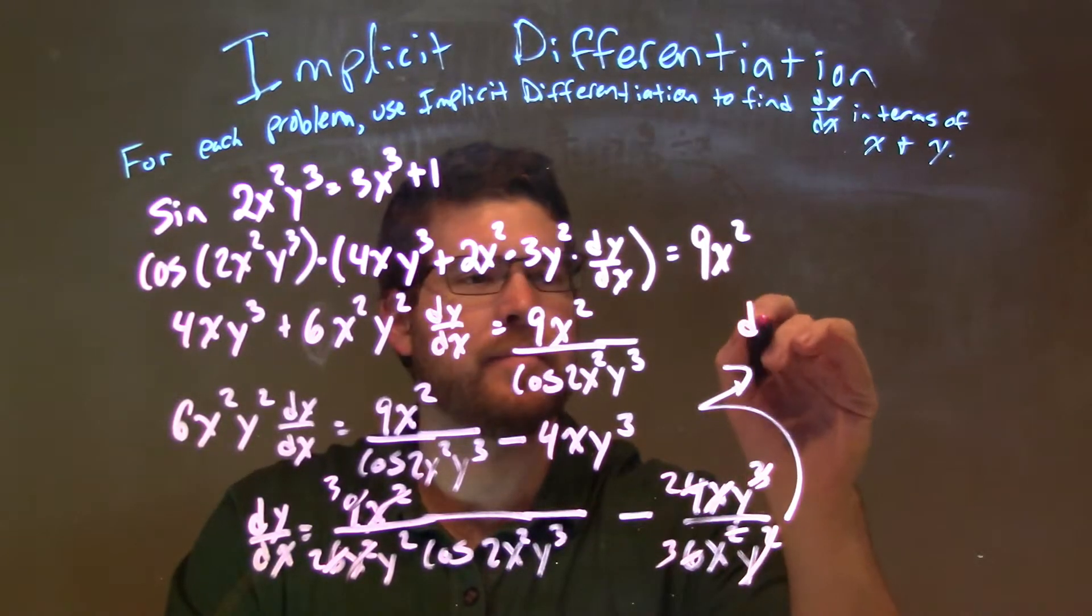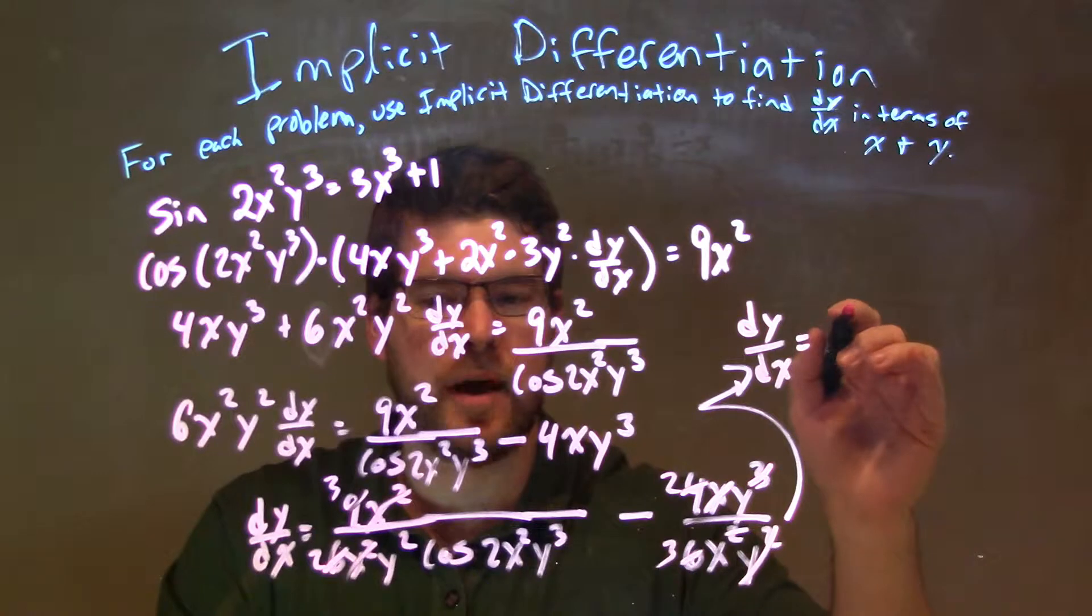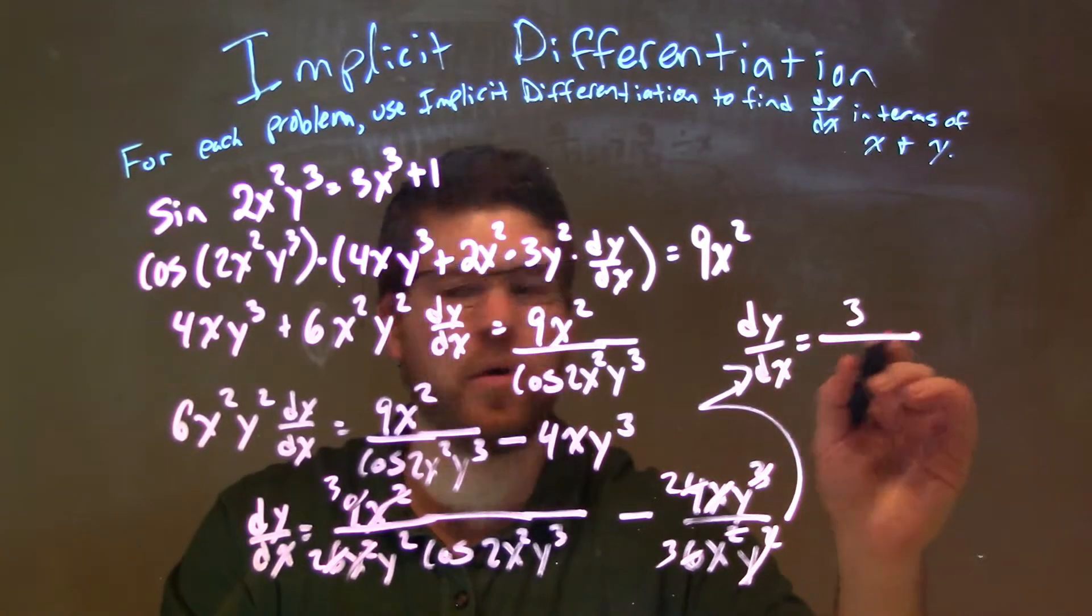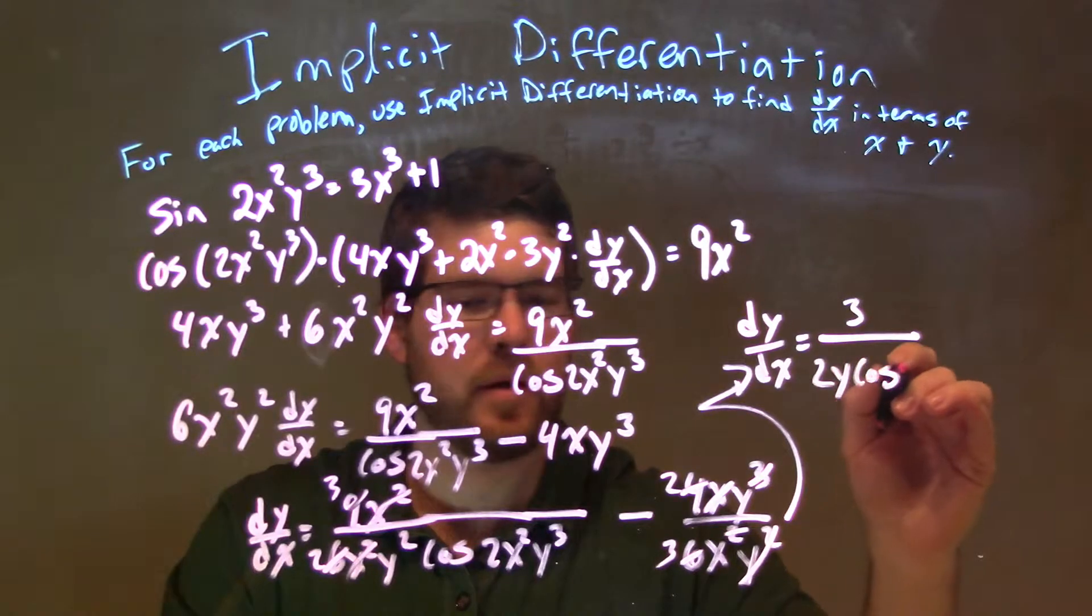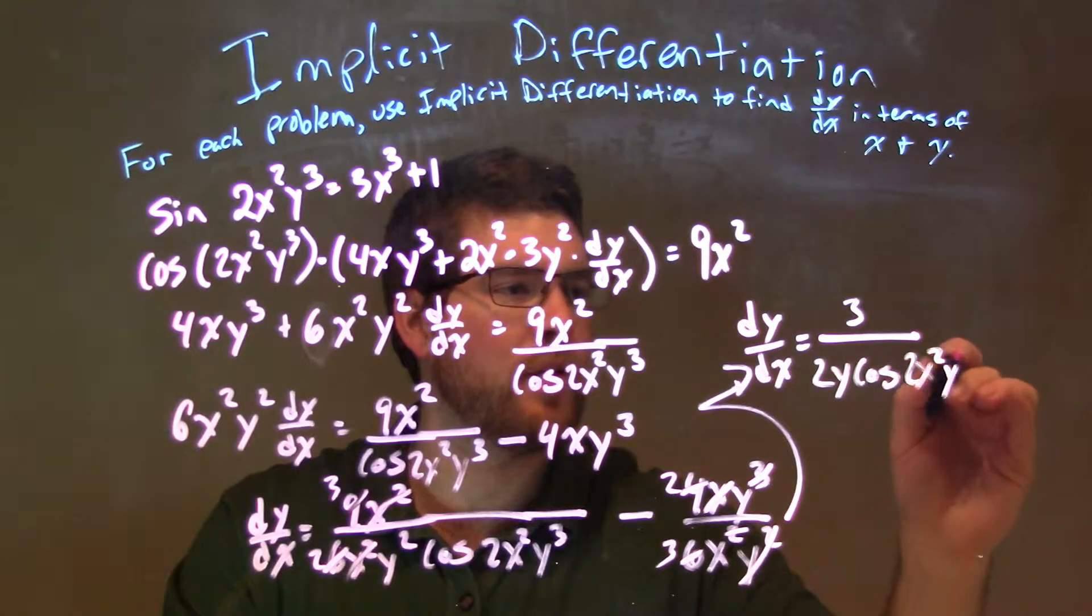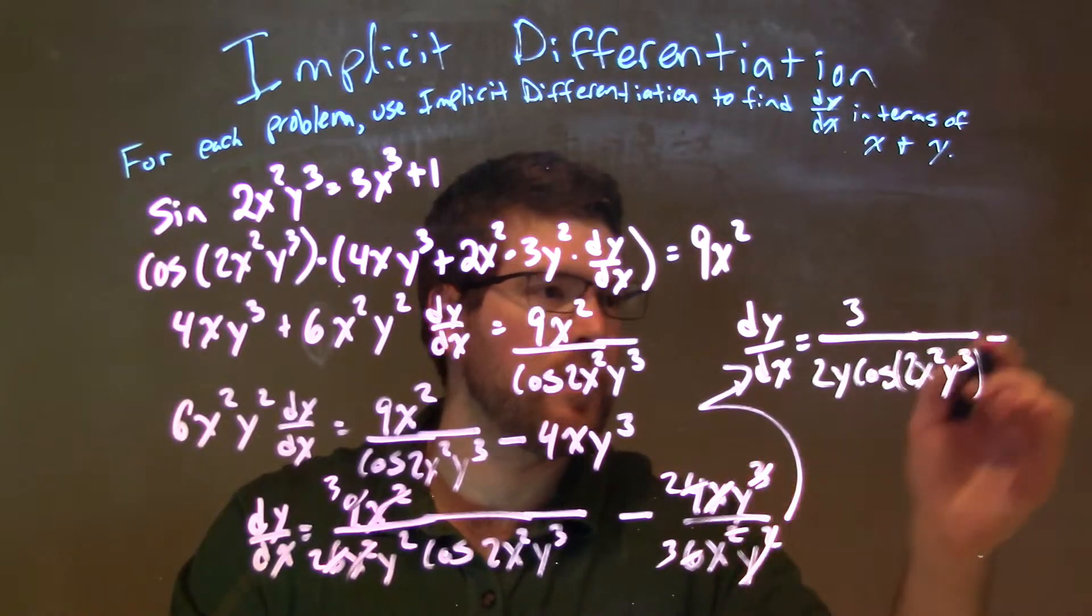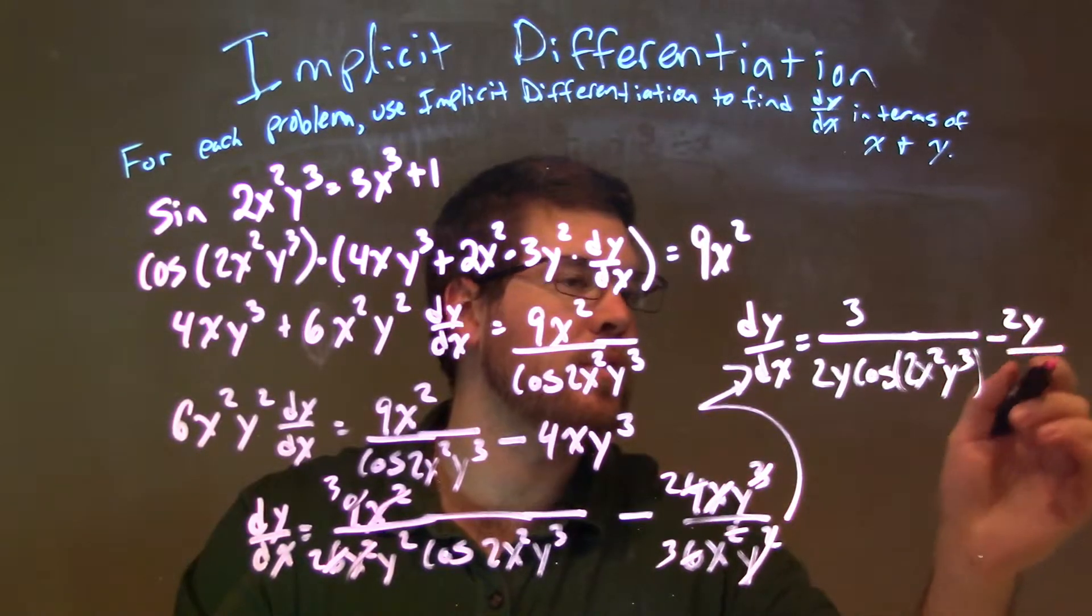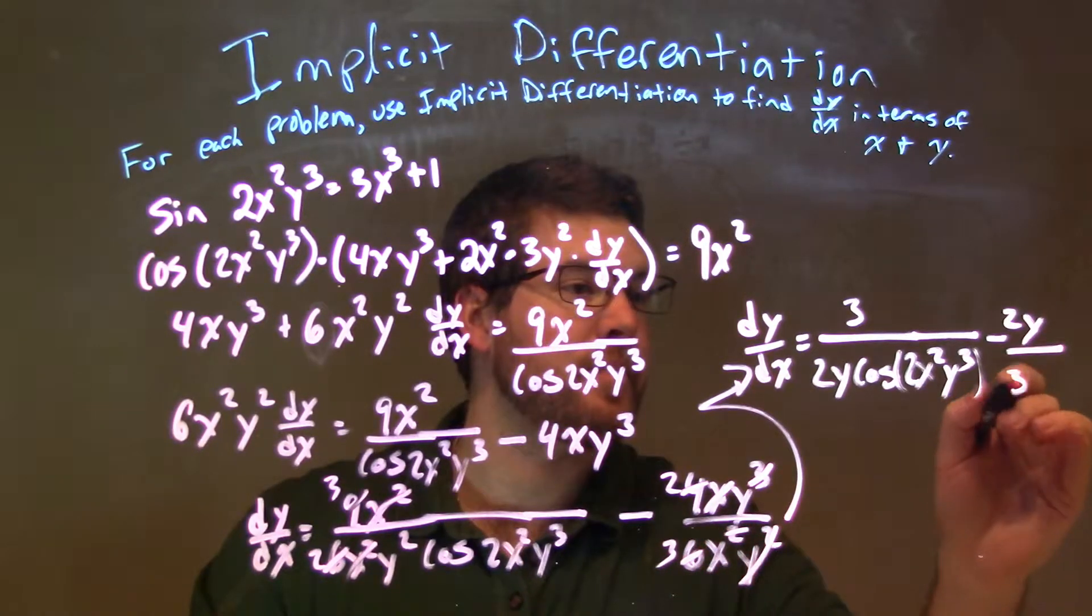So when I write this, my final answer, dy/dx is 3 over 2y squared cosine of 2x squared y cubed, and that's cosine of all of that, minus 2y over 3x.